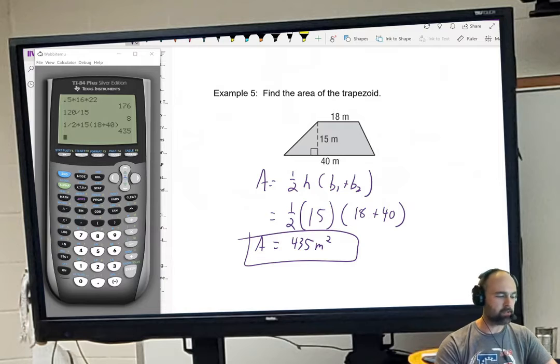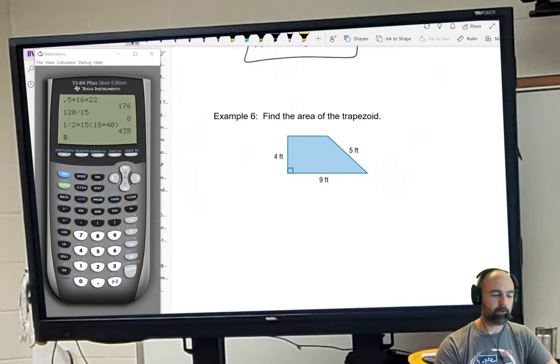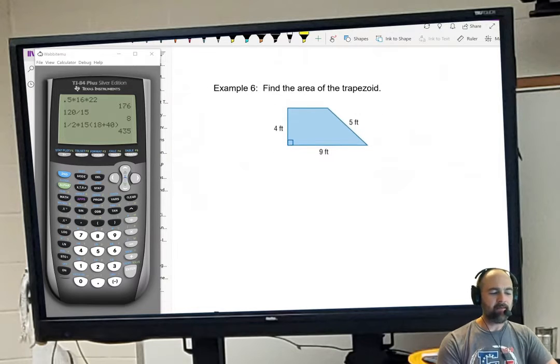Make sure if you haven't caught this yet, make sure you're putting your units on these things. Areas are always unit squared. Perimeters are always just units.